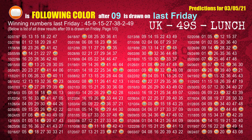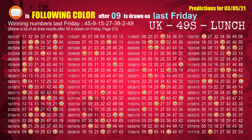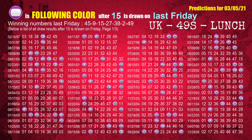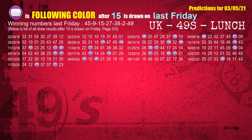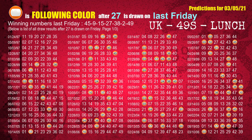The second winning number last Friday is 09. The most frequently following color is orange when 09 is the winning number on last Friday. The third winning number last Friday is 15. The most frequently following color is purple when 15 is the winning number on last Friday. The fourth winning number last Friday is 27. The most frequently following color is orange when 27 is the winning number on last Friday.